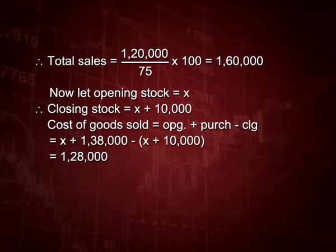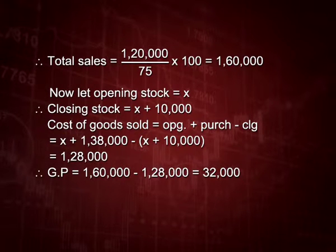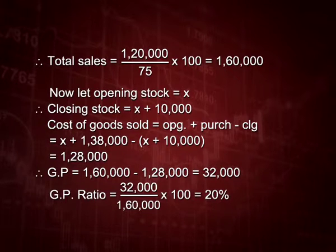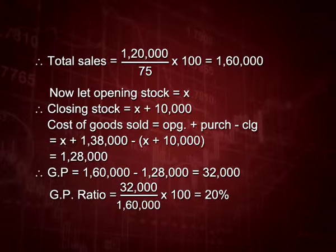Gross profit is calculated by deducting cost of goods sold from sales: 1 lakh 60 thousand minus 1 lakh 28 thousand equals 32 thousand. So the GP ratio is 32 thousand divided by 1 lakh 60 thousand, multiplied by 100, giving 20 percent.